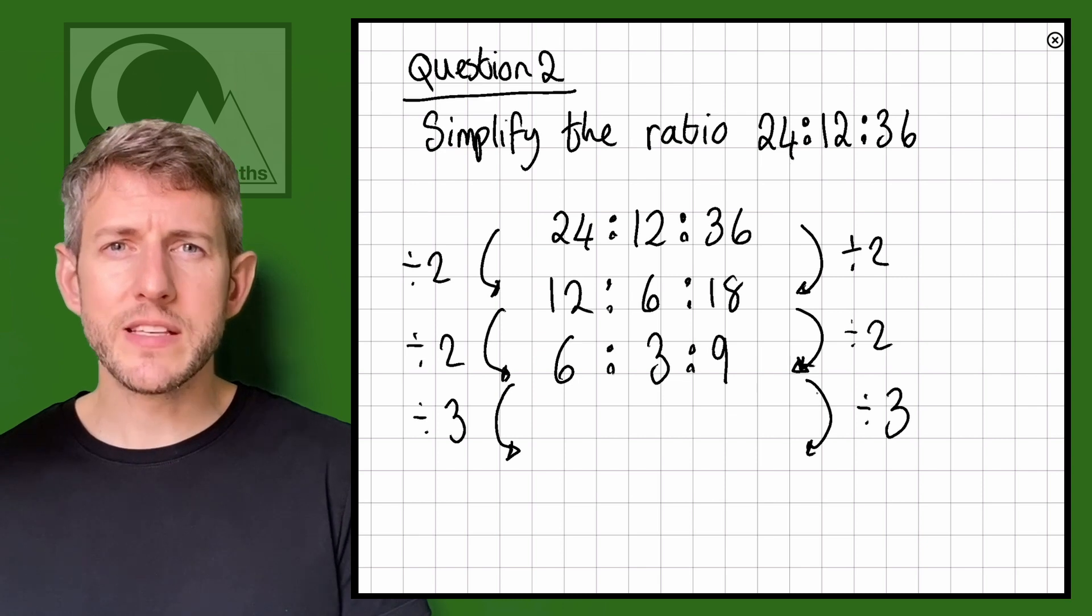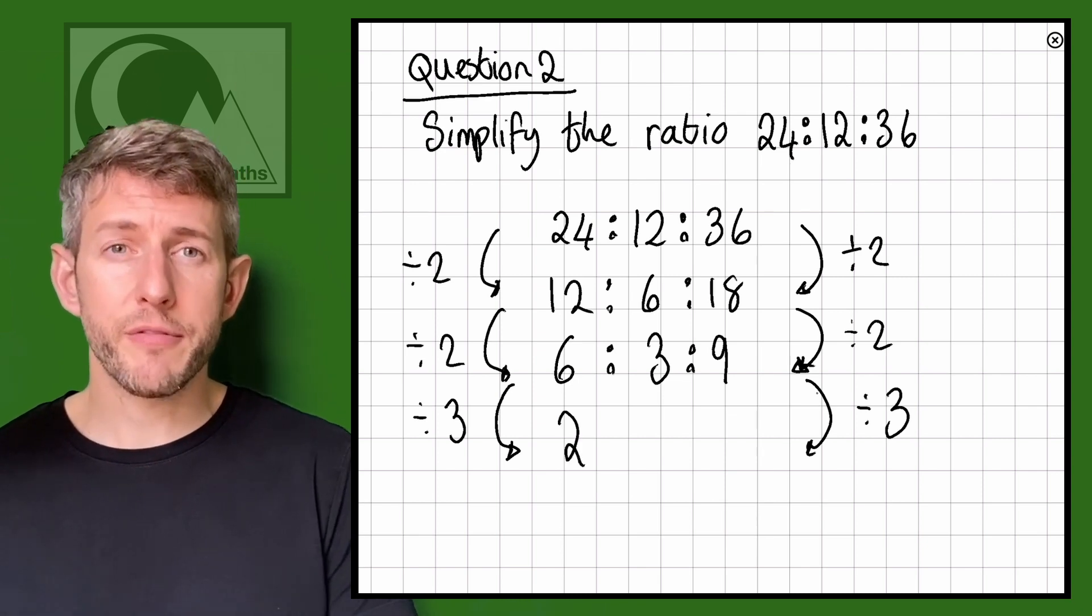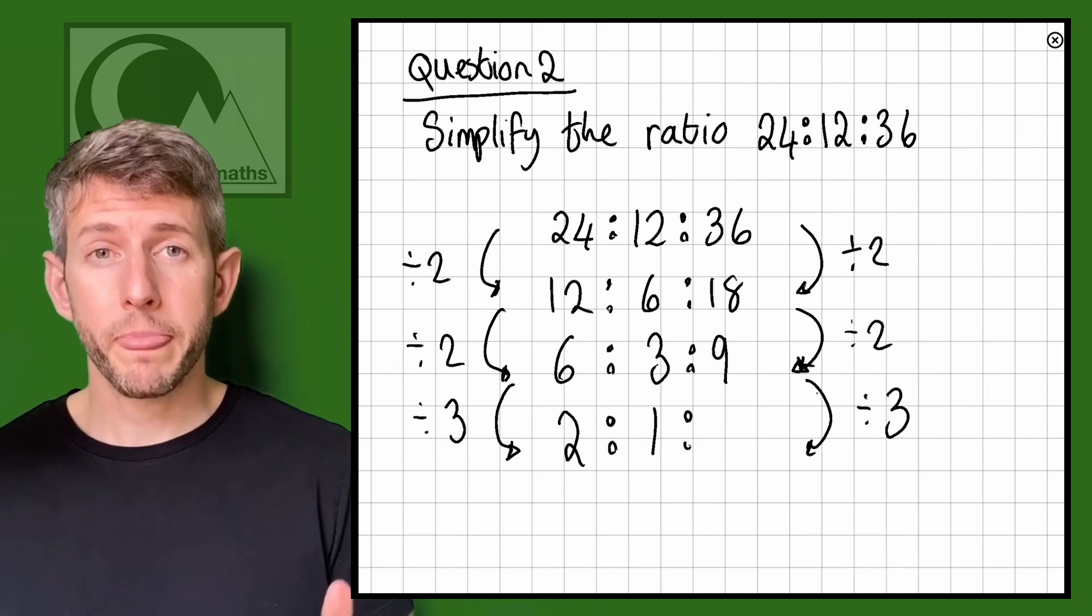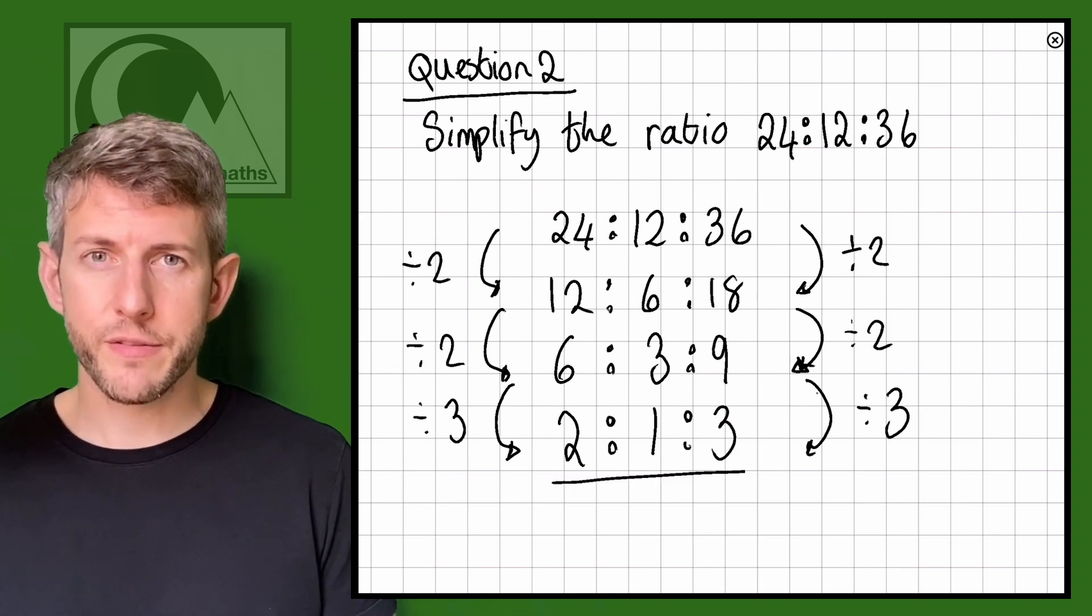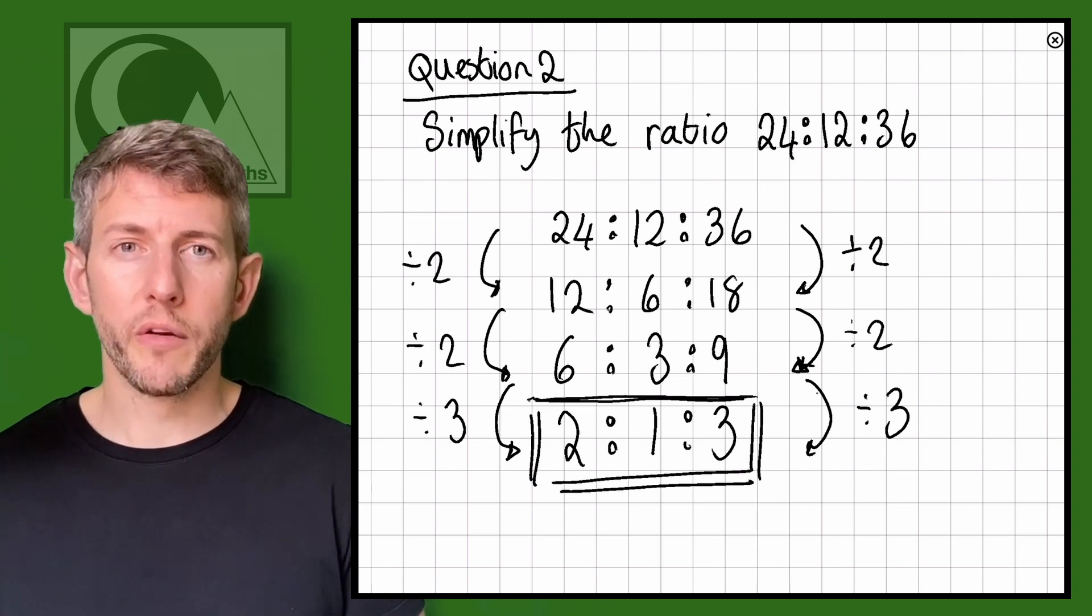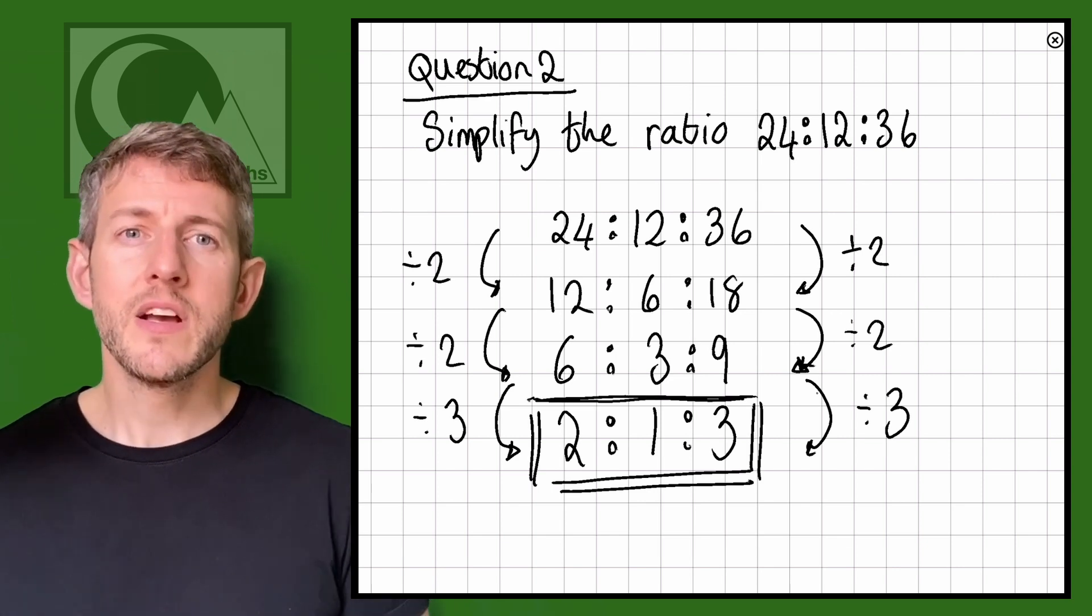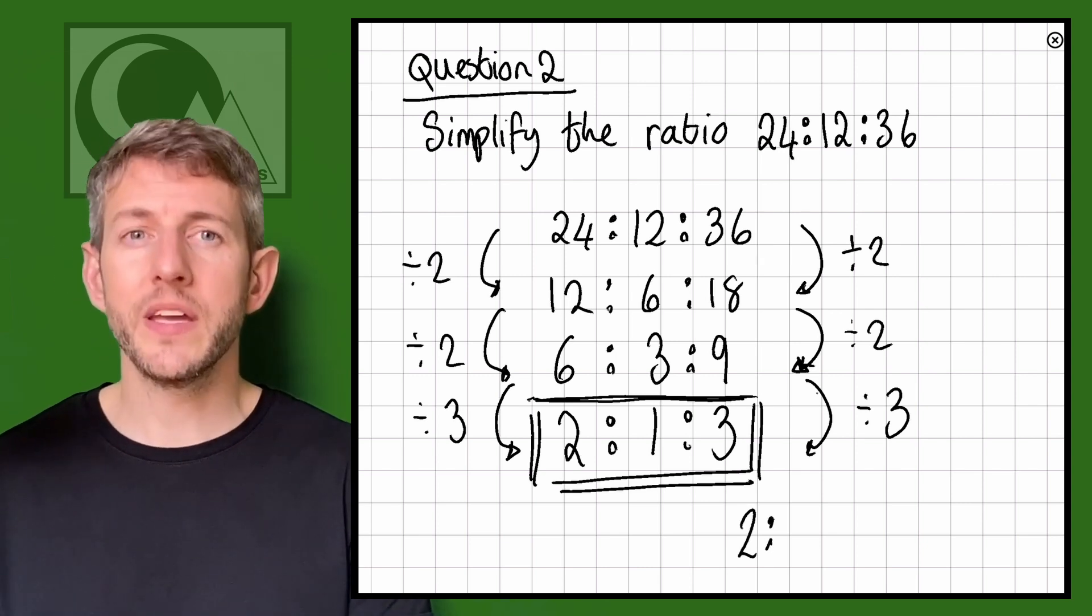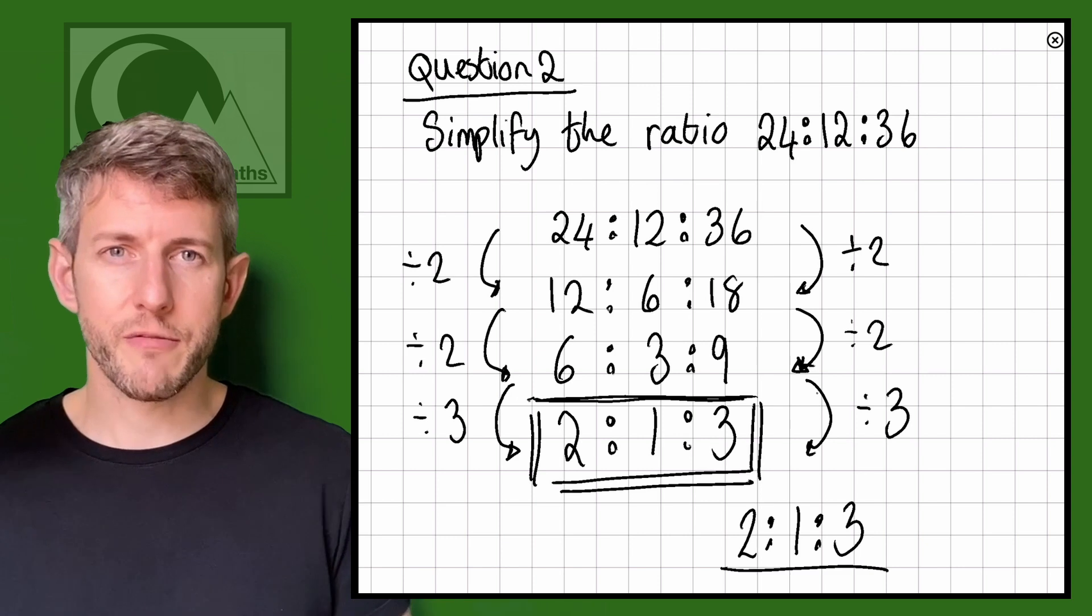So let's have a look at this. We're going to go 6 divided by 3 will give us 2, 3 divided by 3 will give us 1, and 9 divided by 3 will give us 3. So there we go, so the answer is going to be 2 to 1 to 3. If we're looking at that ratio in its simplest form, its simplest form is going to be 2 to 1 to 3.